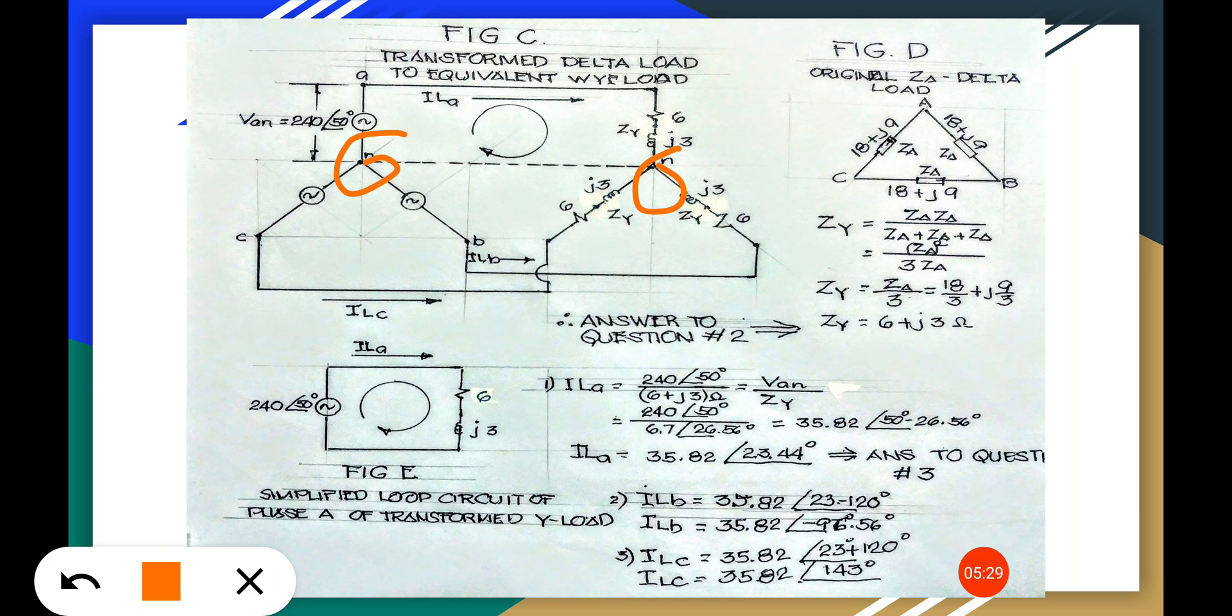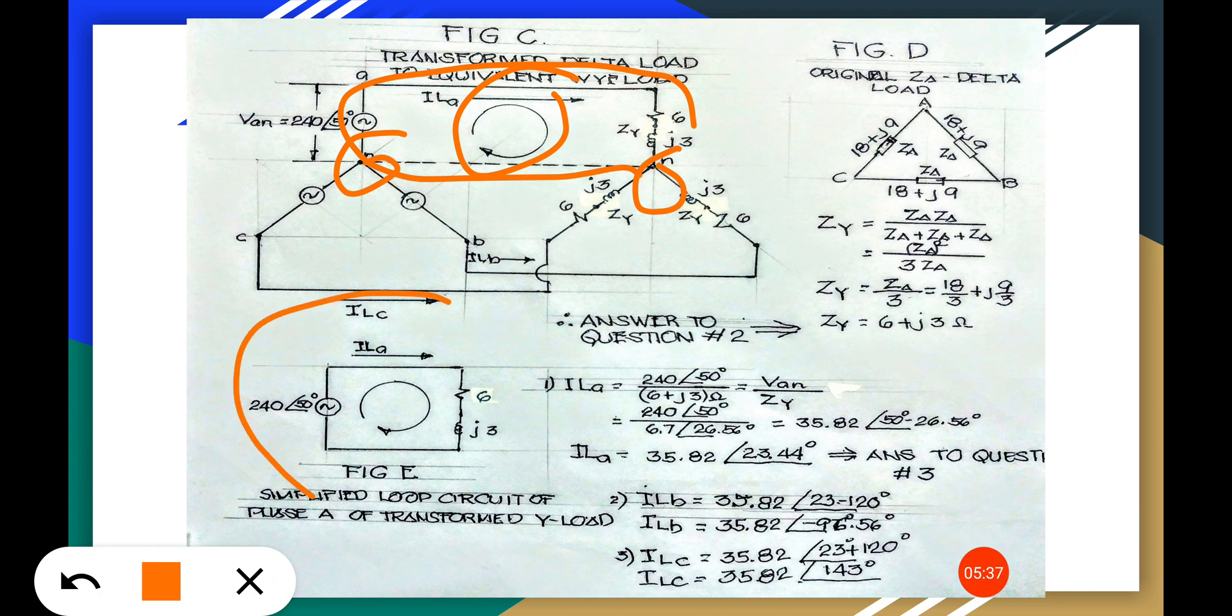This one, and get this, then transform it to here so it's now easy to find the ILa.